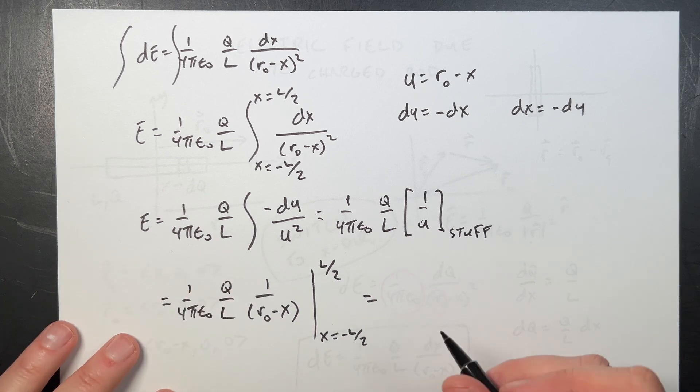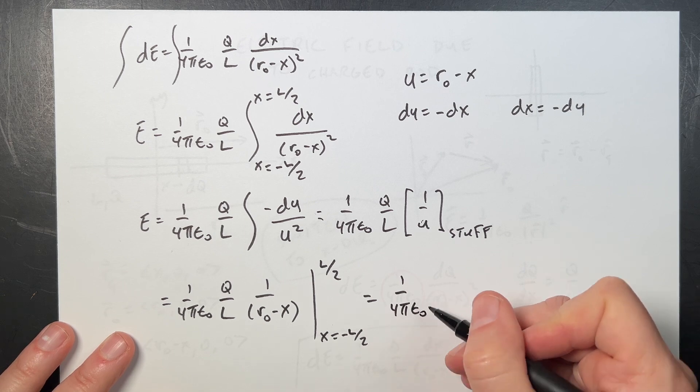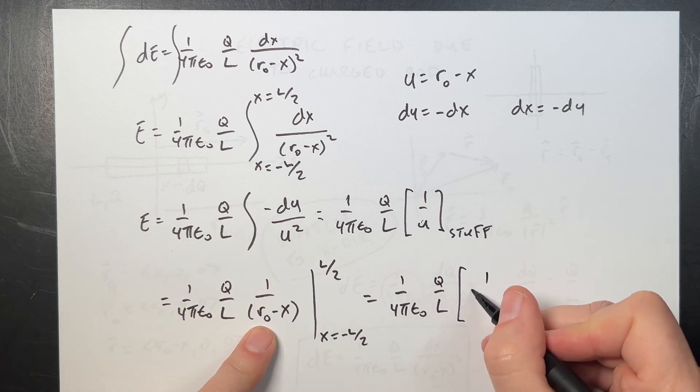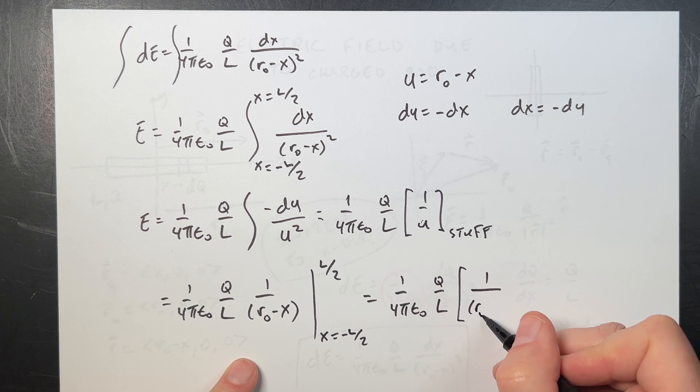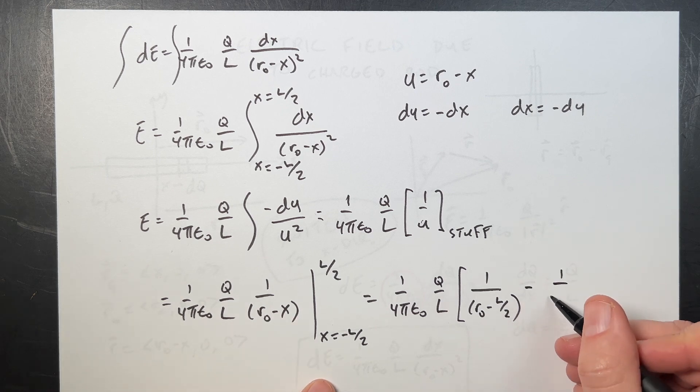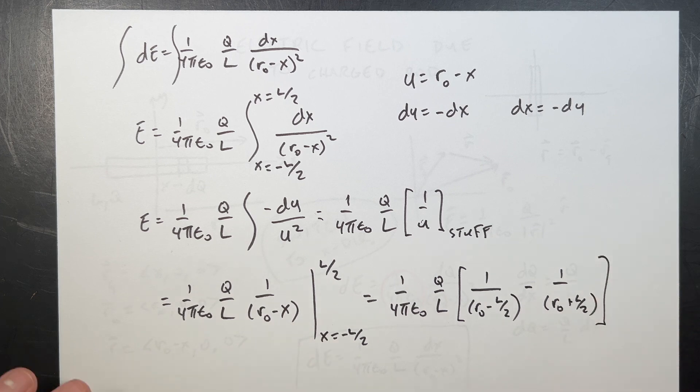Well, that's pretty easy because that's all constant right there. I'm going to bring that out. 1 over 4π epsilon naught q over L. Now I'm going to put in L over 2 here for x. So I get 1 over r0 minus L over 2. And then I'm going to do the minus, minus 1 over r0 minus negative L over 2, which is plus L over 2. And we could leave it there. We're done.